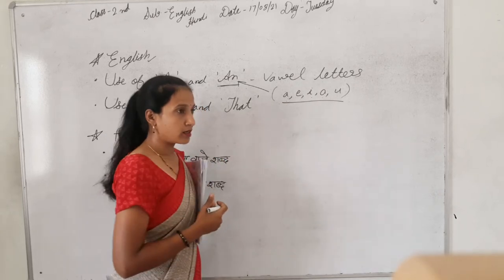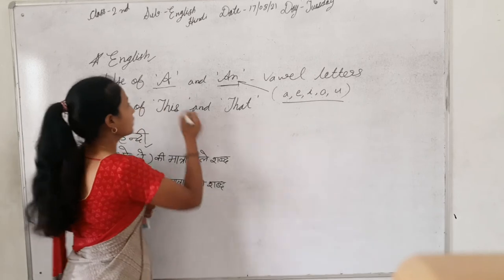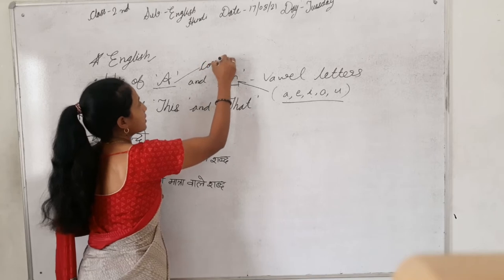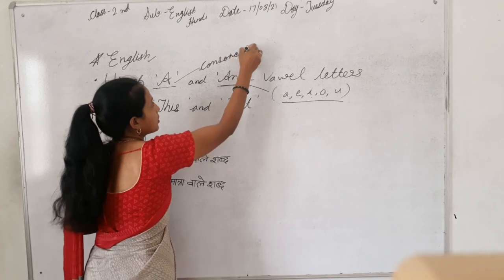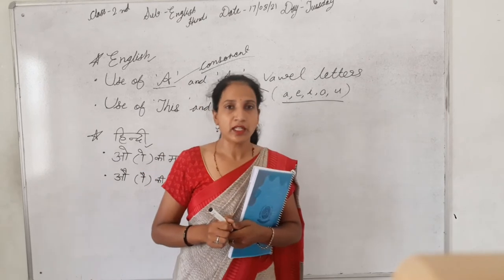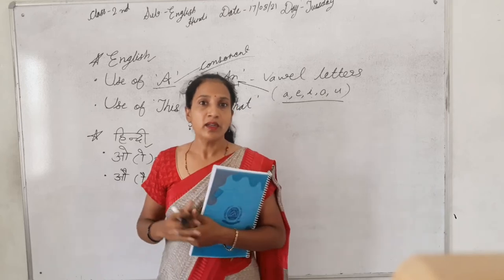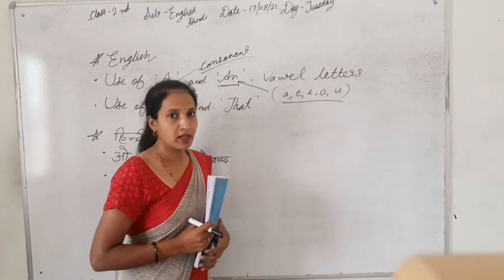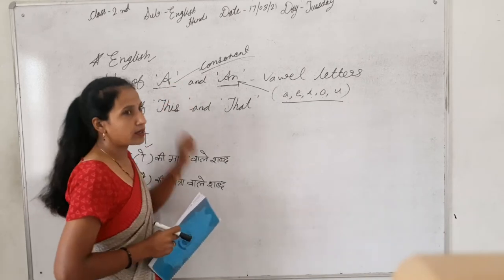If the first letter is a consonant — not a vowel — then we use the article A before it. So for English letters that are consonants, we use the A article.